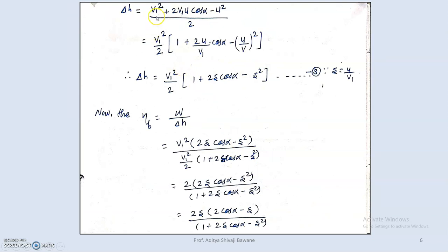Simplifying further, taking v1 squared over 2 as common: delta h equals (v1 squared over 2) times (1 + 2s cos alpha − s squared), where s equals u divided by v1. This is equation number 3.